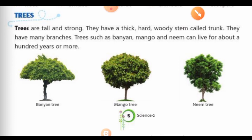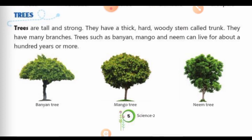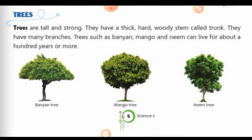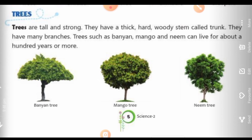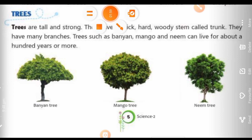First is trees. Trees are tall and strong. Trees lumbe or mzboot hootay hai. They have a thick, hard, woody stem. Inke paas thick, hard, woody stem hootay hai, jishe hem loog trunk boletay hai.